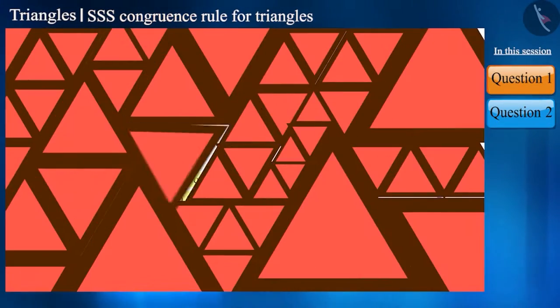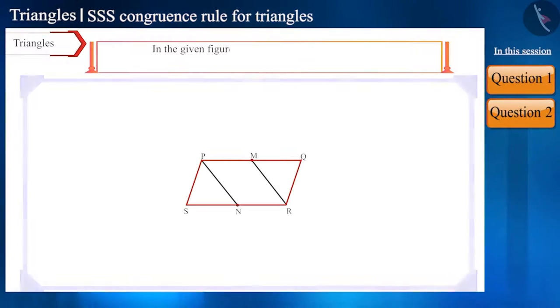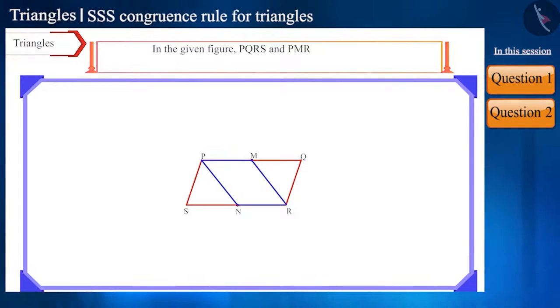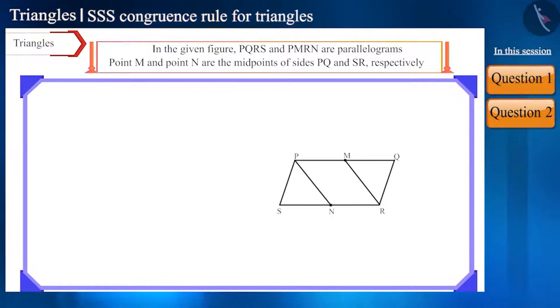Now let's move to the next question. In the given figure, PQRS and PMRN are parallelograms. Point M and point N are midpoints of sides PQ and SR respectively. Show that triangle PSN is congruent to triangle RQM. Friends, it's given that PQRS is a parallelogram.